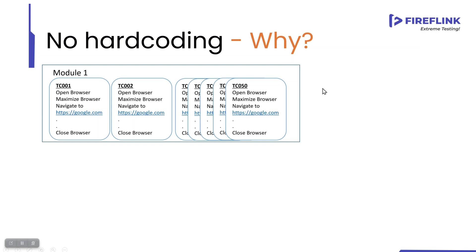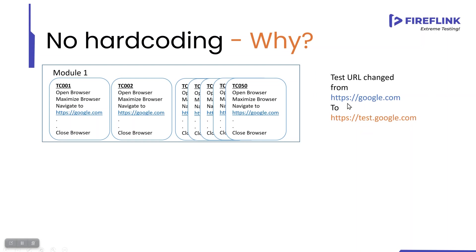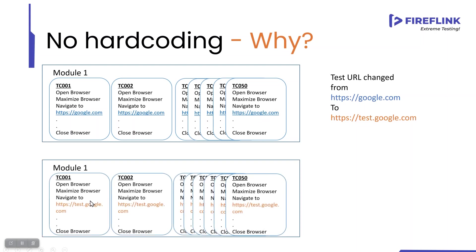Now my manager is saying the URL has been changed. Since we are working on testing, obviously the URL will change. There is no one constant URL in a testing environment — the test URL will always keep changing. When the URL is changing from google.com to test.google.com, in the same module I have to change the URL in each and every script. So how many times am I going to change the URL? I have to change it 50 times because I have 50 scripts.